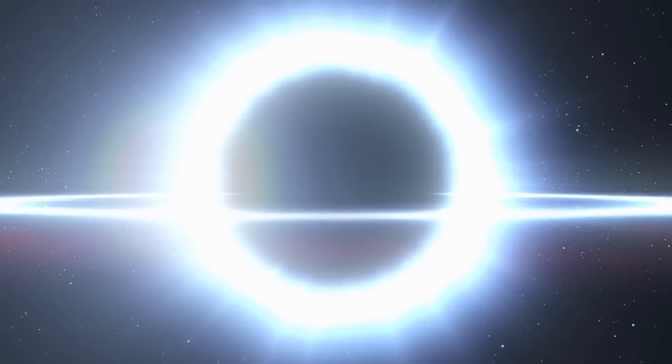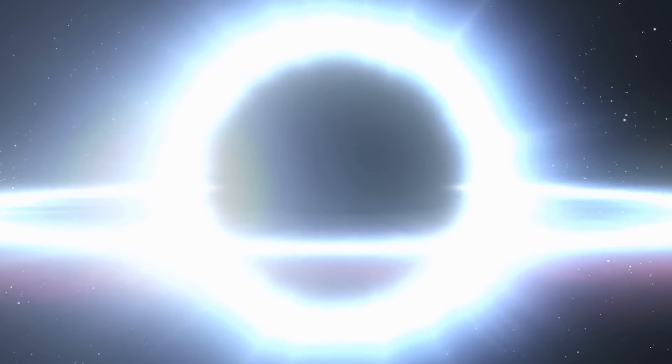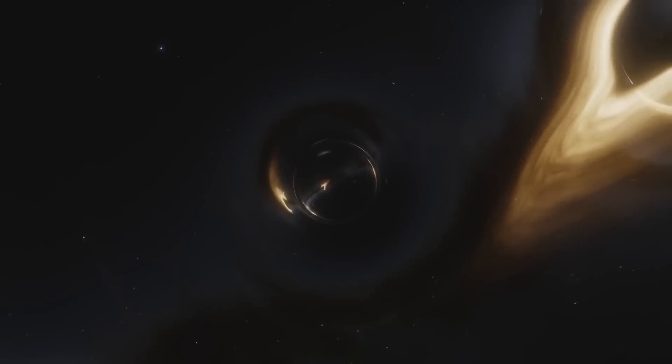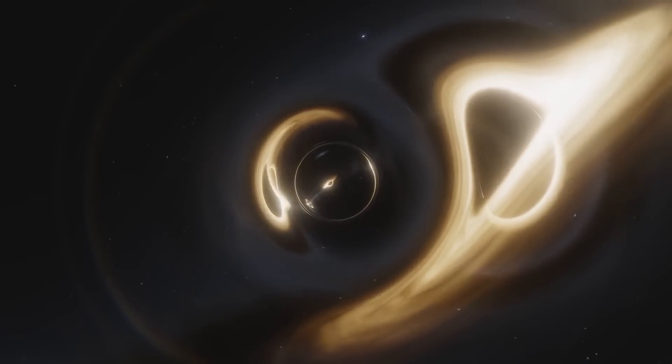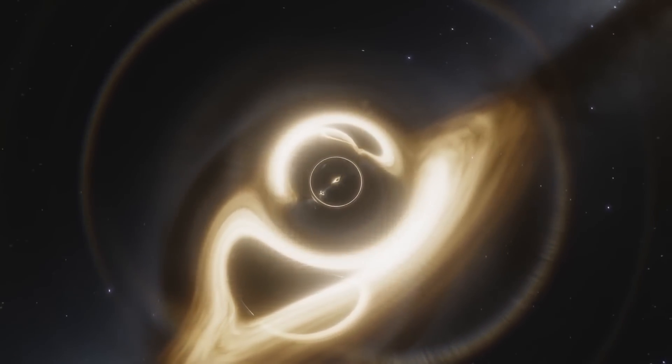This means that black holes become white holes almost at the instant they form. However, outside observers continue to see a black hole for billions of years because of gravity's time dilation. If this theory is correct, black holes that formed in the early years of the universe could be ready to die and burst into cosmic rays or another form of radiation at any moment.